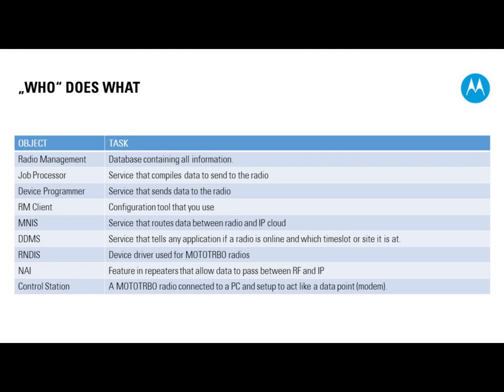When you want to change anything inside the radio management database, you access it using the client application. The client application connects to the radio management server — the database — and you can access and modify all the stored information. If you want to write or read a radio, you do this from the radio management client, which instructs the job processor or device programmer to act.